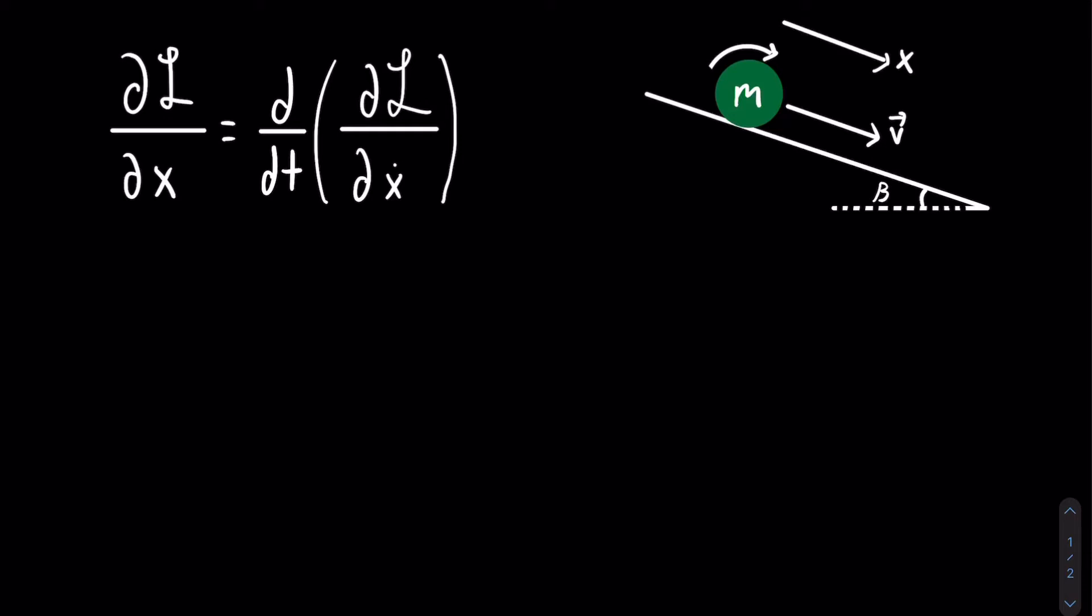For a rolling ball, it will have rotational kinetic energy and translational kinetic energy. So this means that the total kinetic energy will be equal to the sum of these two kinetic energies, which will be one-half mv squared for the translational, and one-half i omega squared for the rotational.